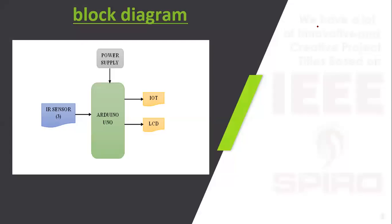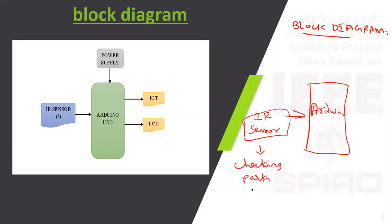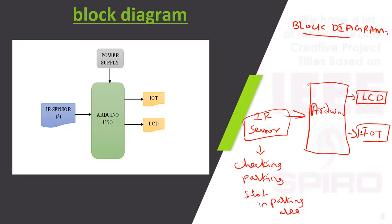In the block diagram of our project, we use an Arduino controller. Using an IR sensor, we check the parking availability in the parking area — specifically, whether each parking slot is free or not. The status is displayed on an LCD, and the user can also check before parking using IoT.